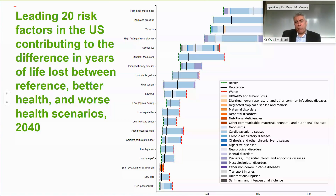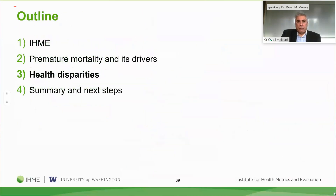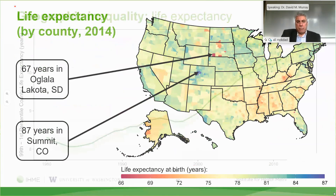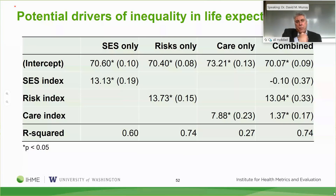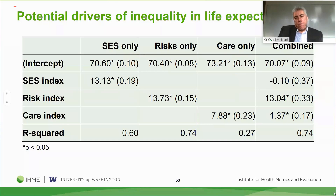That message also comes through in a slide from a paper published about a year ago showing that behavioral and metabolic risk factors account for 74% of county-level variability in life expectancy. If you consider socioeconomic status, health care, and risk factors together, you explain 74% of the variability—and you explain the same amount just with those top five risk factors alone. So it's quite likely that variability otherwise attributable to SES or medical care is mediated by the risk factors.